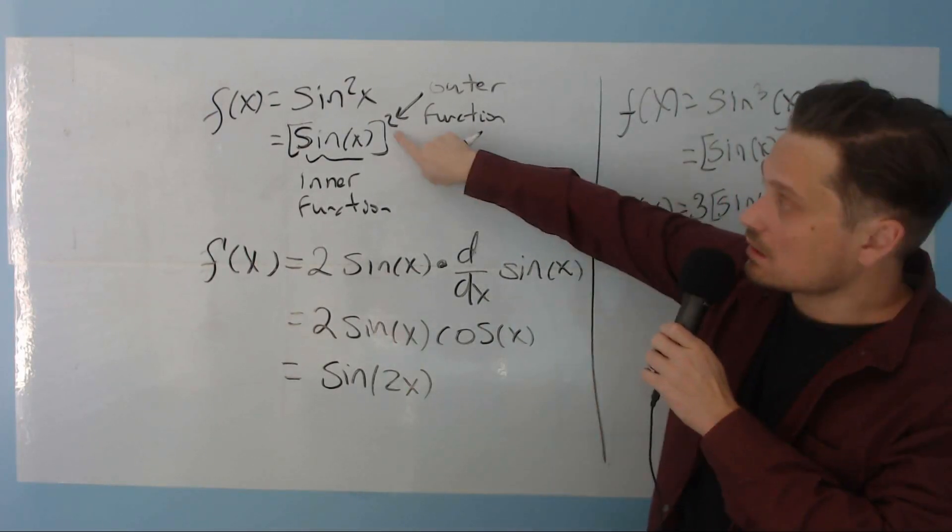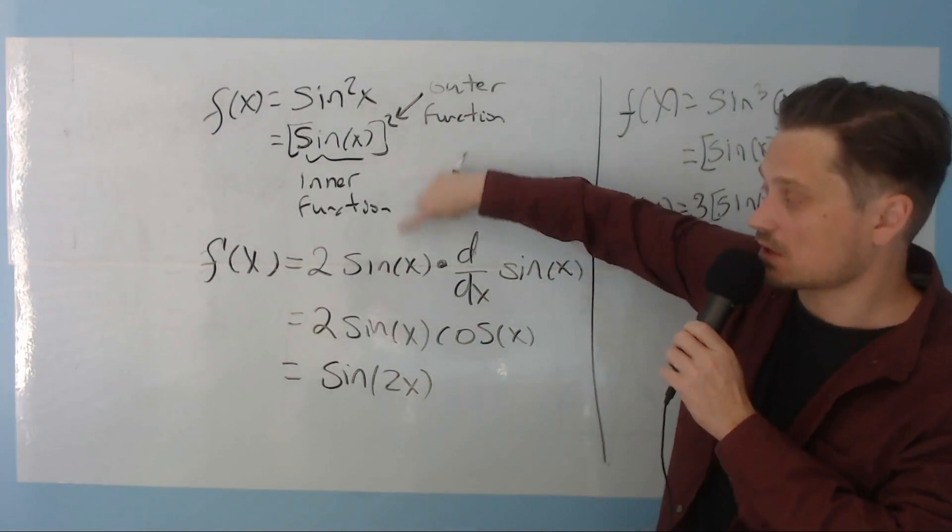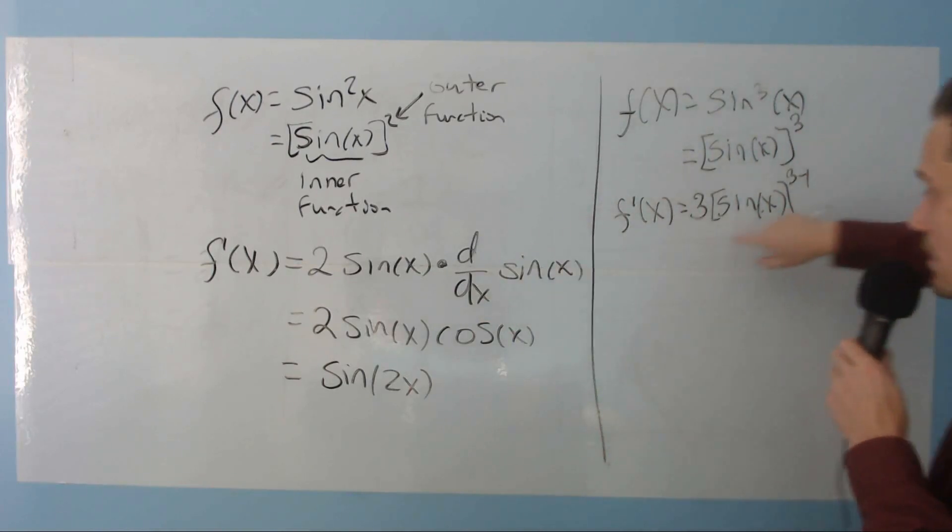But back here, when you do 2 minus 1, only 1 was left over. So we were just able to write sine of x directly. But this is different now. So here, you also then have to multiply by the derivative of the inside. So that would be the derivative of sine of x.